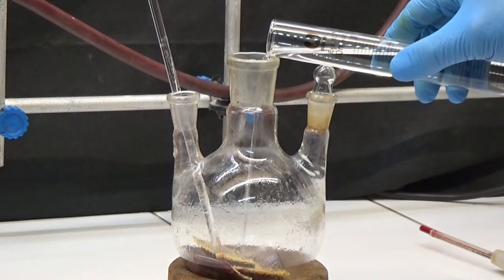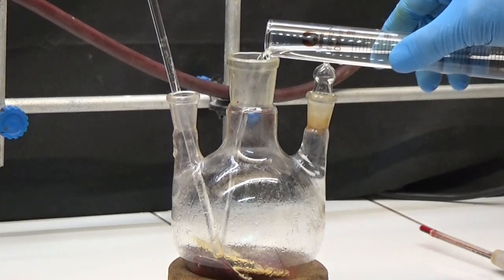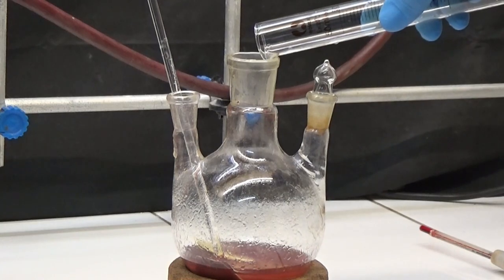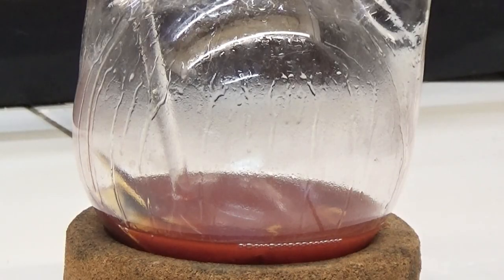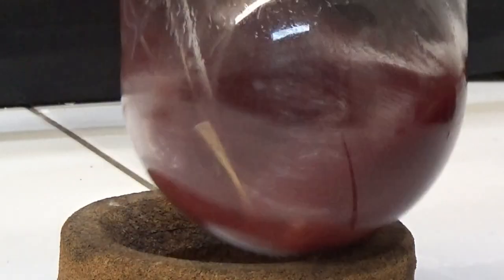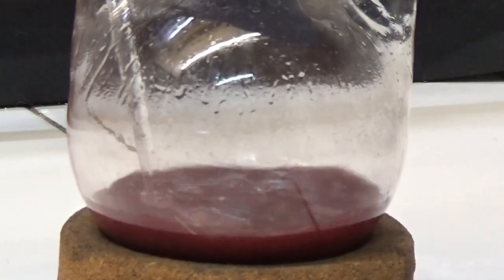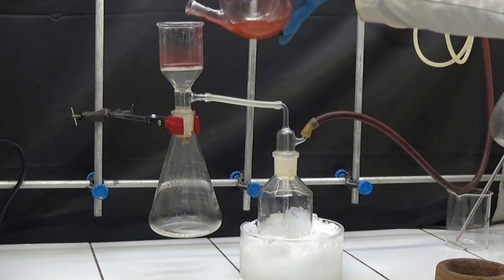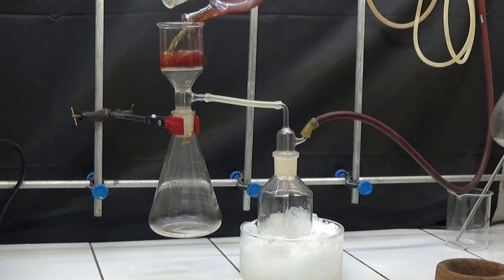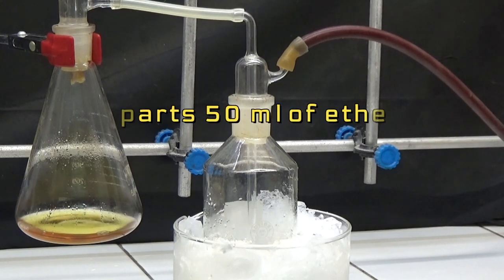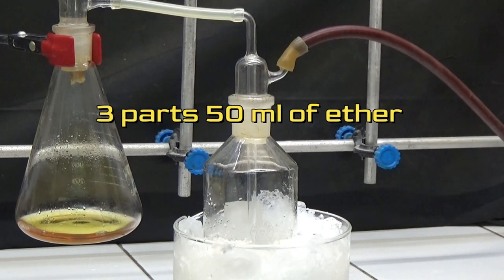The white solid in the flask is dissolved with 50 milliliters of ether and also filtered through the funnel. In this filtrate, we put an ice trap to condense the ether that evaporates by aspiration. In order to dilute the solid, three parts of 50 milliliters of ether were used.